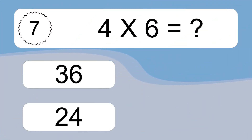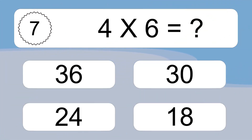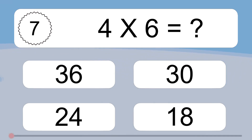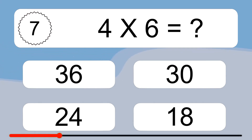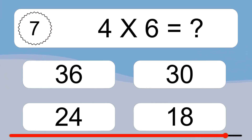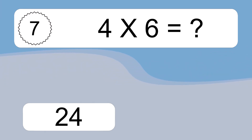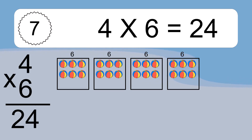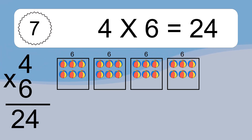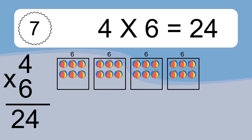Four times six equals what? Four times six equals 24. We have four boxes, and each box has six colorful balls inside. If you count all the balls in all the boxes together, you will have four times six balls. This equals 24 balls.